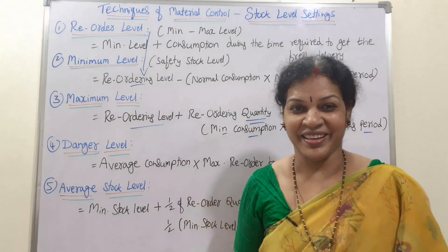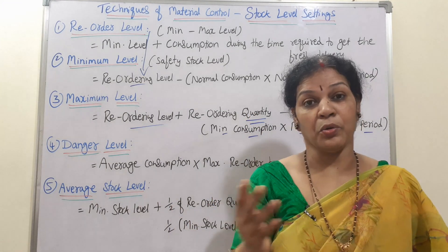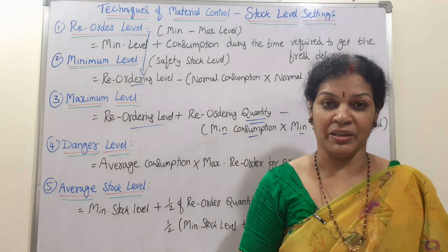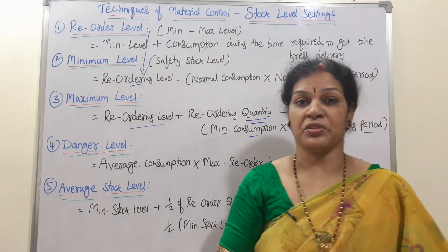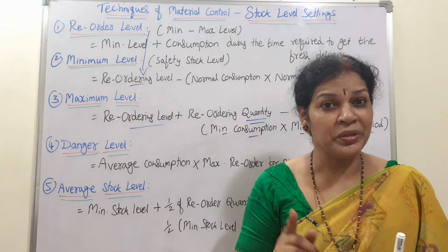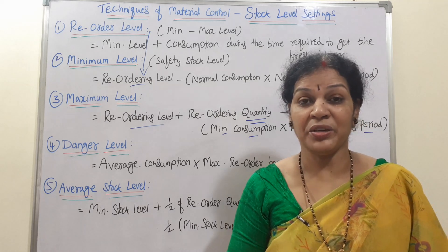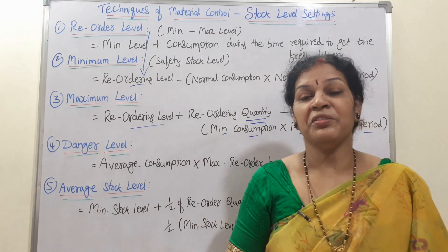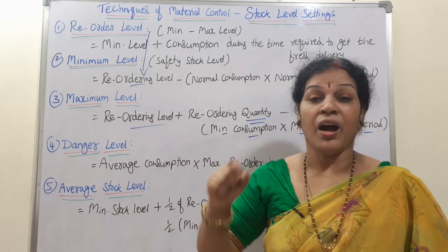The fourth one is danger level. Danger level means the stock has fallen below the minimum level — it is a shortage situation. Whenever there is a danger level, the stores department stops issuing material because the material is very less. Only in emergency cases will they issue material. If someone requests it urgently and it is critical, only then, on that specific request, will a limited amount be issued.